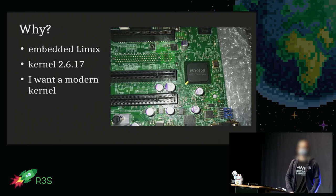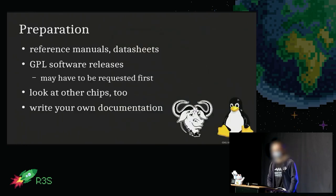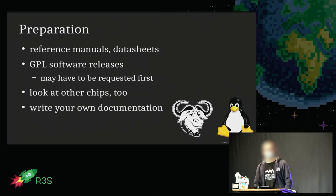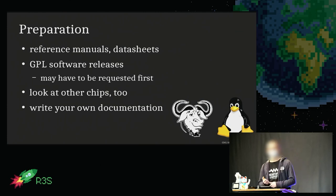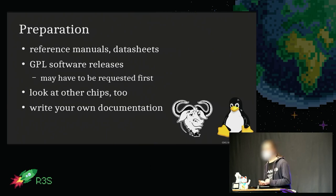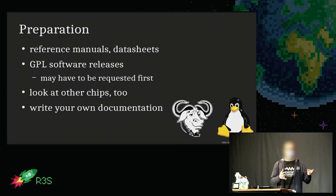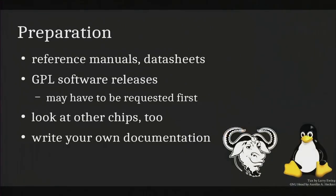So how do you go about that? First, you should collect basically all the information you can find about the chip you're interested in: reference manuals, data sheets, source code released by the vendor. Due to the GPL license of the kernel, vendors have to publish their Linux source code — but sometimes you have to send them a request first, and sometimes you have to be really persistent with that request.